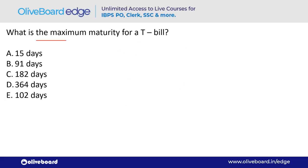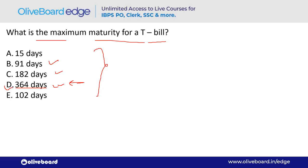What is the maximum maturity for a T-Bill (Treasury Bill), a money market instrument? The maximum maturity is 364 days. T-Bills are issued in three maturities: 91 days, 182 days, and 364 days. T-Bills can also be called zero coupon bonds.